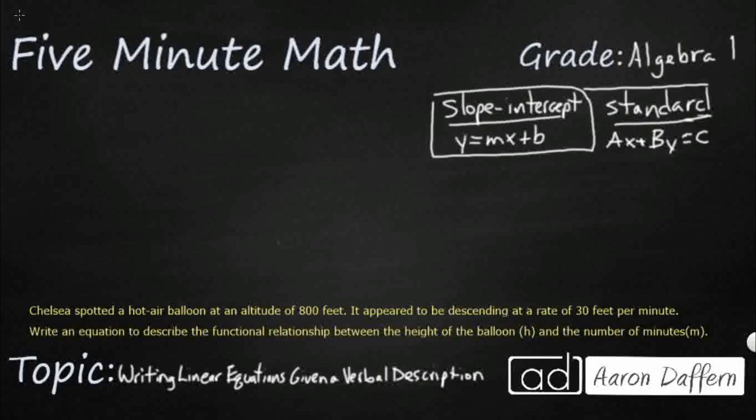So we have a sample problem down at the bottom, and we need to either write it in slope-intercept or possibly standard form. Chelsea spotted a hot air balloon with an altitude of 800 feet. That looks like it's going to be a constant because it's not necessarily given to us with a variable. It appeared to be descending.